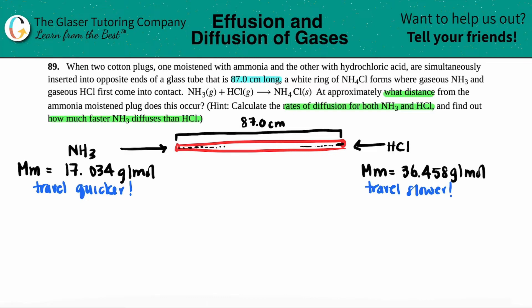HCl is going to be traveling very slowly. So it makes sense that as this is traveling quicker and this is traveling more slowly, the chances that they're going to meet has to be more than half on the HCl side because this guy's only going to travel X amount, and NH3 is going to travel way more.